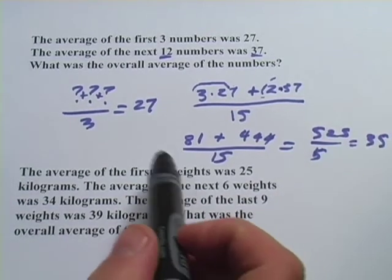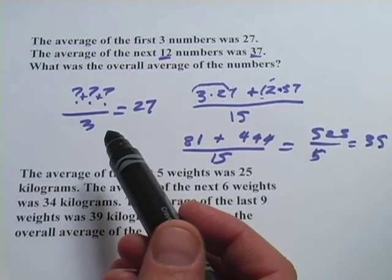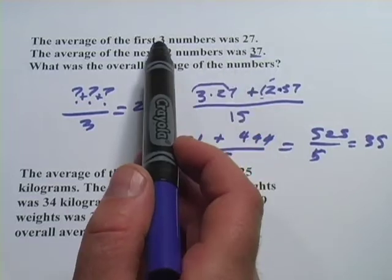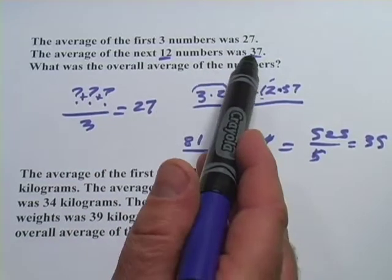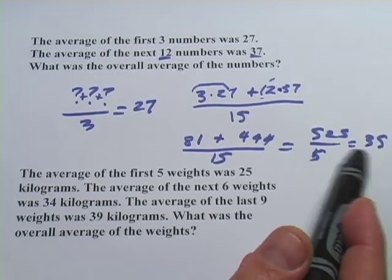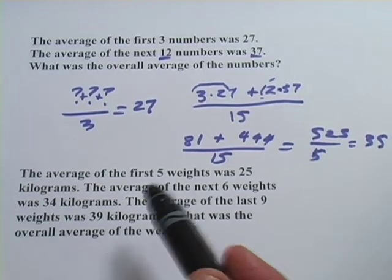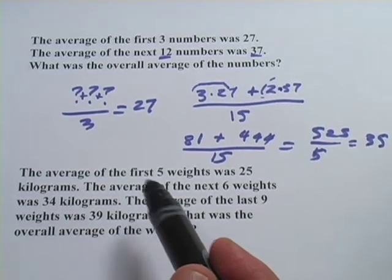And when I look back at the problem to ask myself, does this make sense, I had some numbers that were a small number of numbers that were 27, and some numbers, most of them, that were 37. And the average came out to be a little bit less than 37. That seems to make sense. Let's try another one.